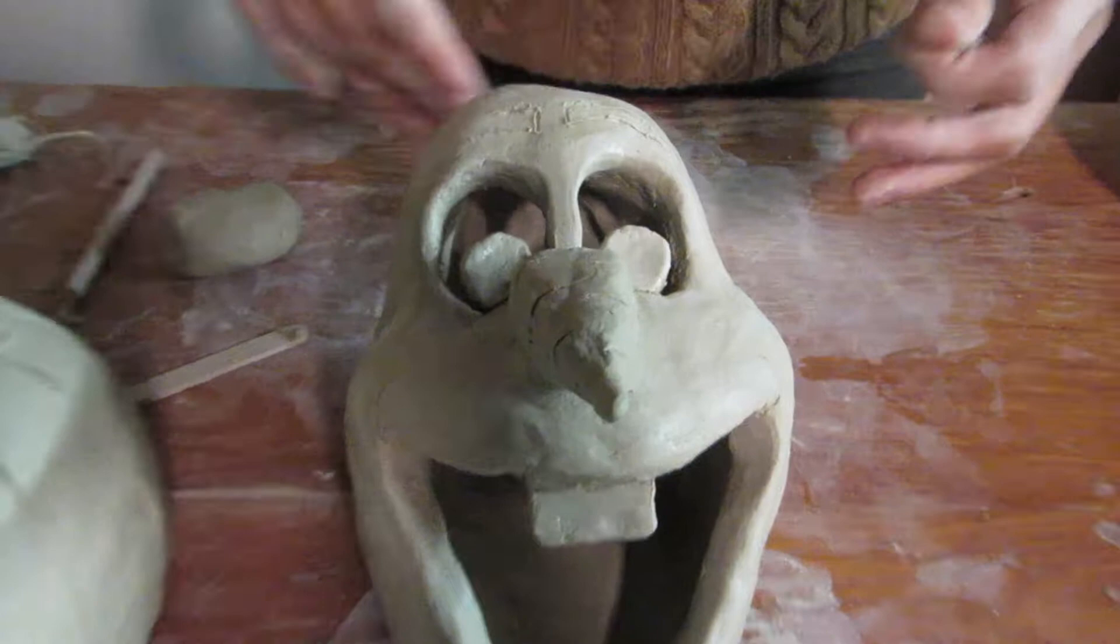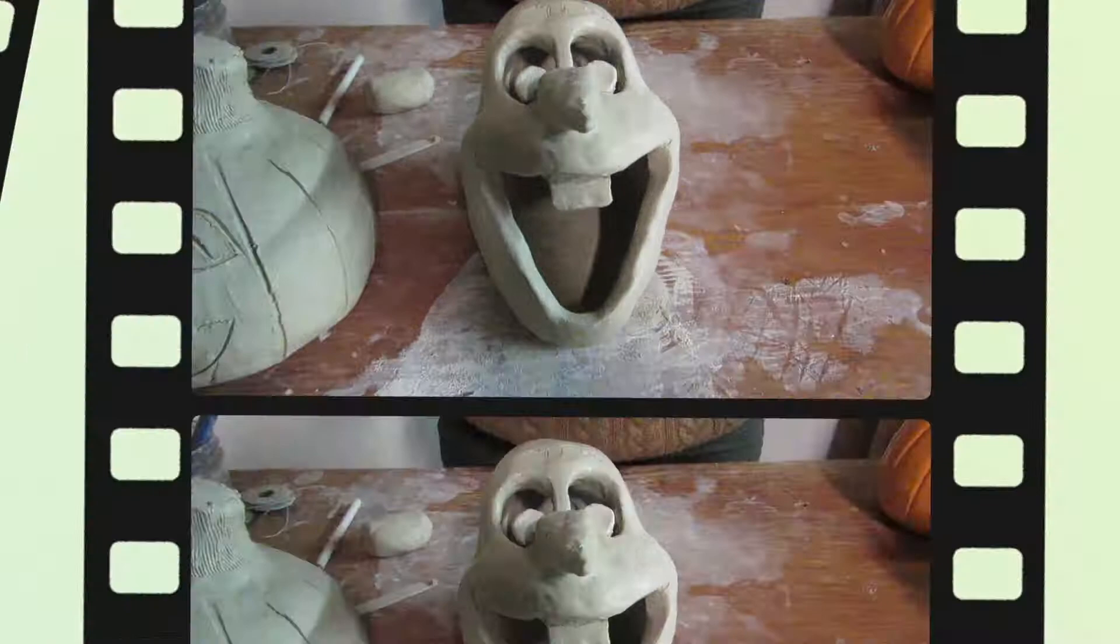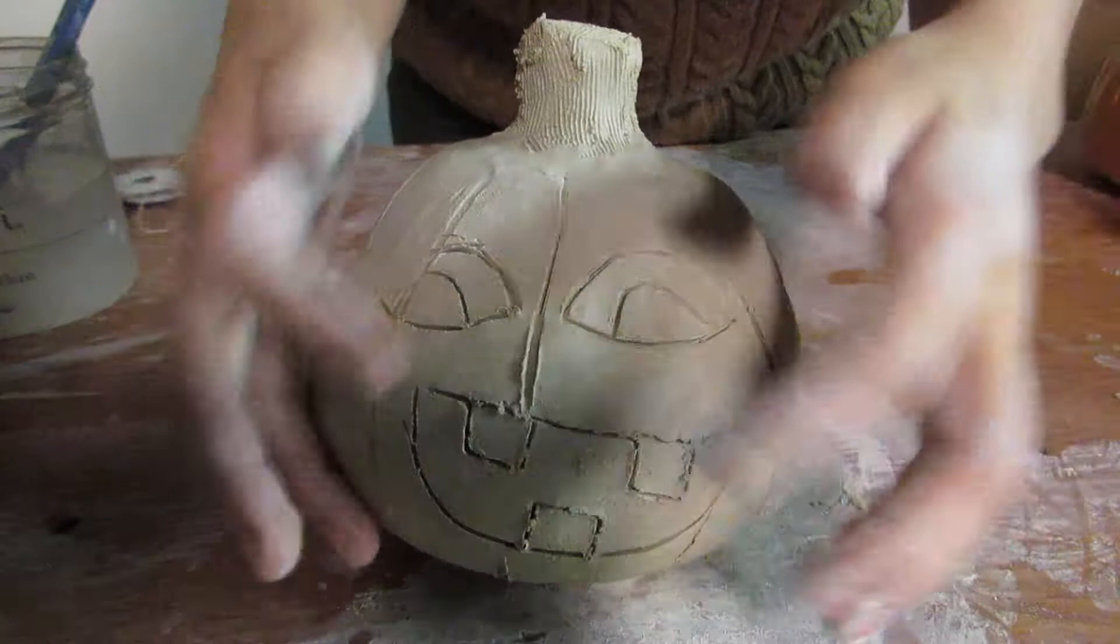So after you're done leaving it overnight, you're going to carve out its mouth and its eyes and then you're going to let it bone dry. After it's bone dry then it's going to get bisque fired and that's when you get to paint them. From this chunk of clay, it'll go to something smooth and beautiful for any decoration.